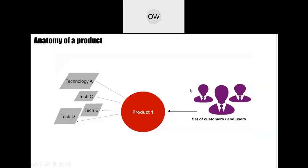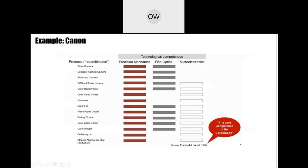One product will serve one set of customers, but different products resulting from different technology combinations will serve other sets of customers. You can also go the other way around: think about your customers or end users, think about their pain and what they need, think about the problems and how to solve them, and then create the product to solve those problems. A product uses different technologies, so you can either go forward or backward in order to serve your customers.